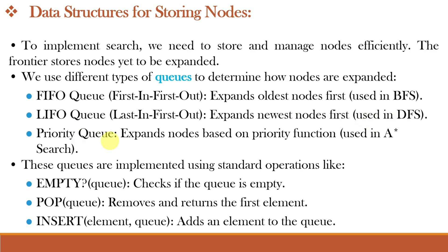The priority queue expands nodes based on a priority function — a heuristic or cost function — and it is used in the A* search algorithm. These queues are implemented using standard operations: empty queue, which checks if the queue is empty; pop queue, which removes and returns the first element; and insert element into queue, which adds an element to the queue.